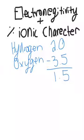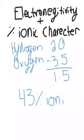Next, we're going to go to the percent ionic character chart and find 1.5. 1.5 on the chart says that it is 43% ionic. And then, that would be our answer.